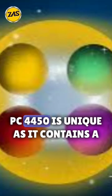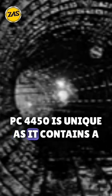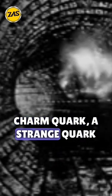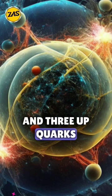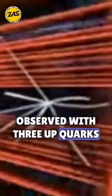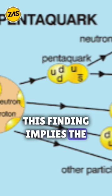PC-4450 is unique as it contains a charm quark, a strange quark, and three up quarks, making it the first pentaquark observed with three up quarks. This finding implies the existence of other undiscovered pentaquark types.